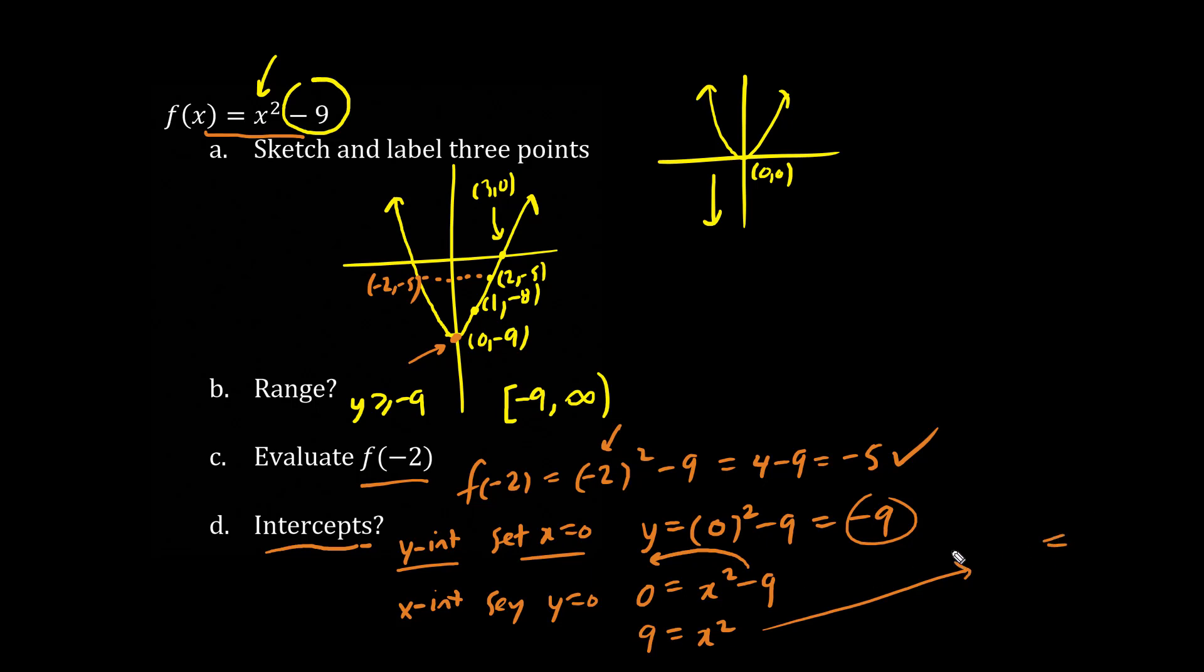And then we take the square root of both sides. So x squared becomes x, and when we take the square root of both sides involving variables, we always have plus minus the square root of this number, which is 9, is 3. So there's two possible answers. Positive 3 here, and negative 3 here. So another word for x-intercept is called solution or roots.